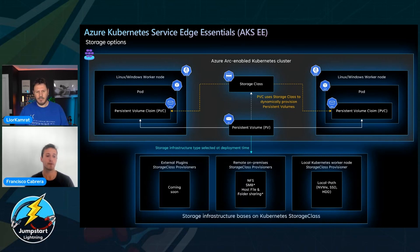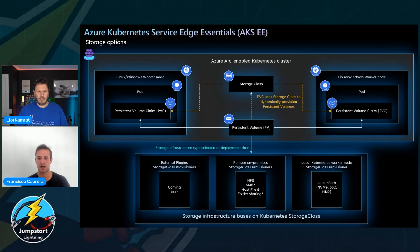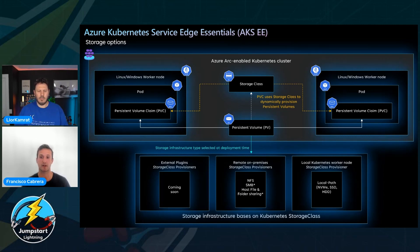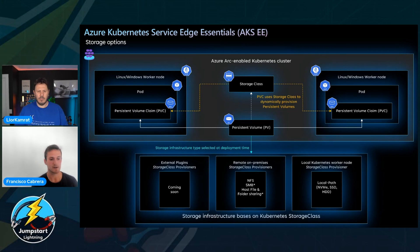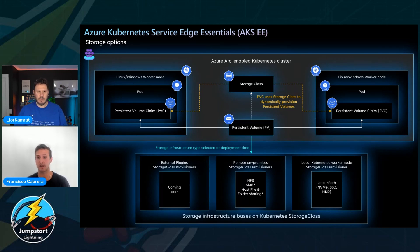Then if we go to what we call remote on-premises storage class provisioners, we have NFS — an automatic provisioner using NFS as the communication mechanism. You need to have your NFS server already set up, and it simply connects to the NFS server using the NFS protocol and mounts that directly on the pod. We also have SMB coming, which is quite similar, and host file folder sharing is coming as well.